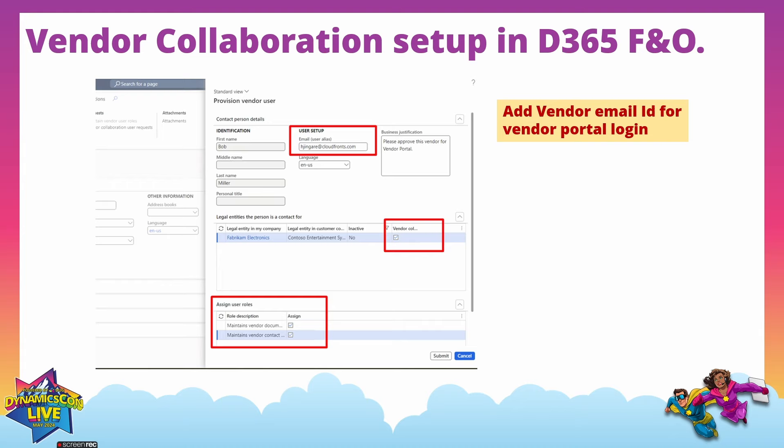Here we provide the email ID that the vendor contact will use to log into the vendor portal. For this session, I've entered my email ID as the vendor email. In the next section, we select which legal entity this vendor will use — this is legal entity-specific vendor access. I am providing access for the USMF legal entity. Below that, we assign user roles: Maintain Vendor Document and Maintain Vendor Contact. I am assigning both roles for this specific vendor, then submit with the business justification: 'Please approve this vendor for the vendor portal.'